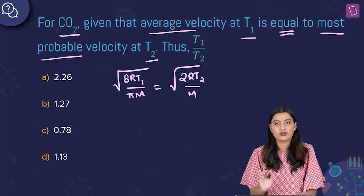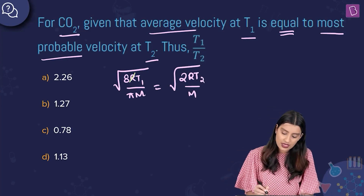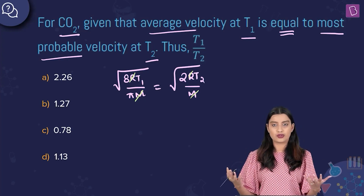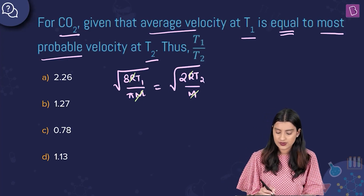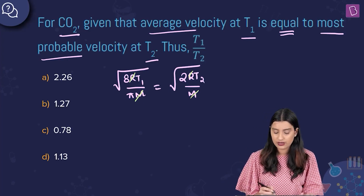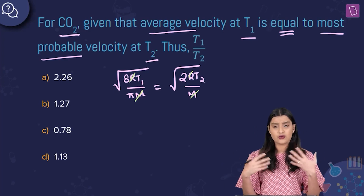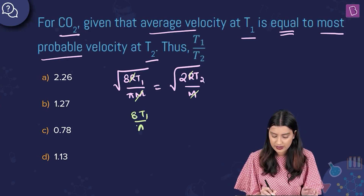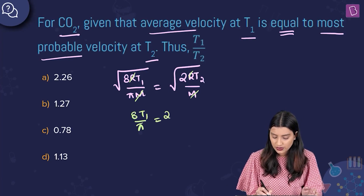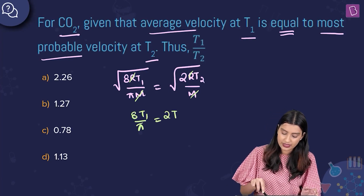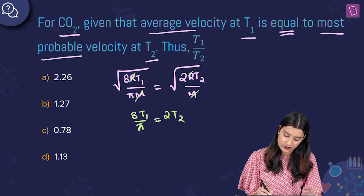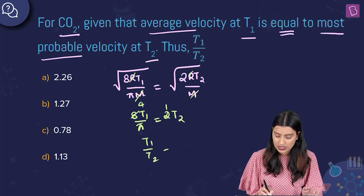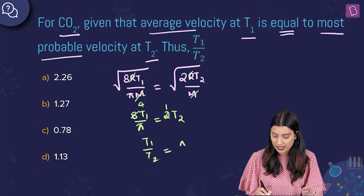Cancel the constants R and M (since we're dealing with CO₂ throughout). Squaring both sides gives 8T₁/π = 2T₂. Simplifying: T₁/T₂ = π/4.